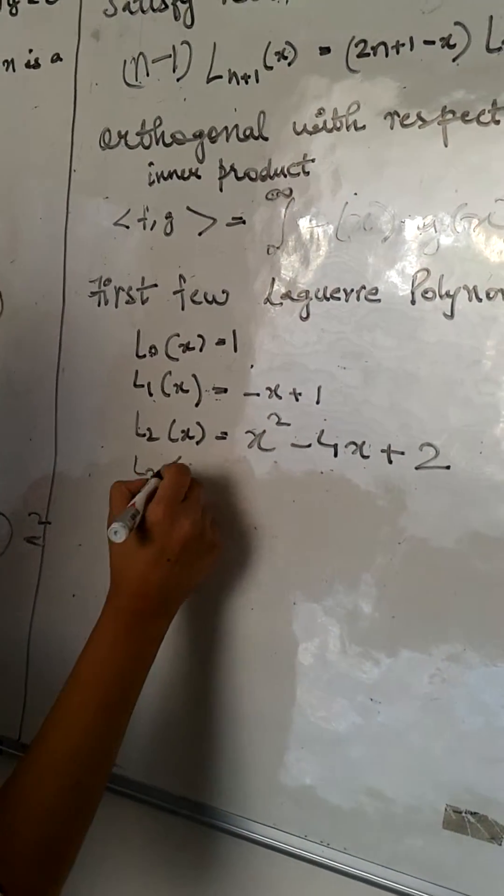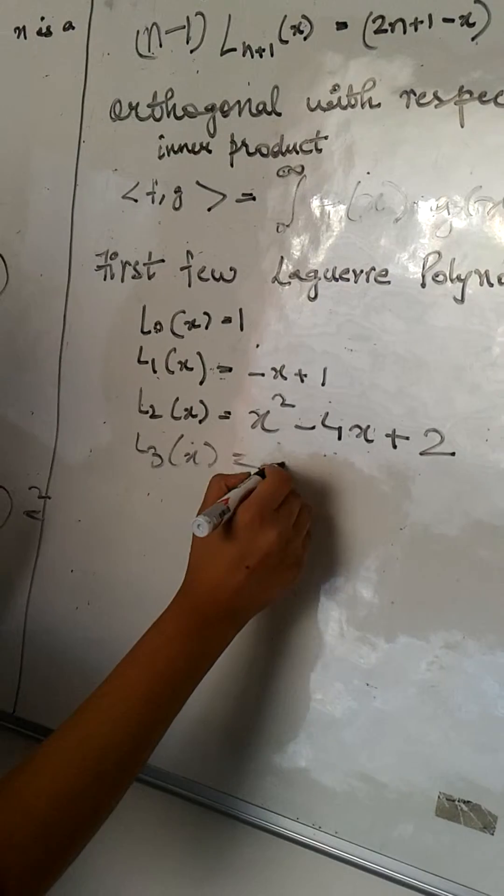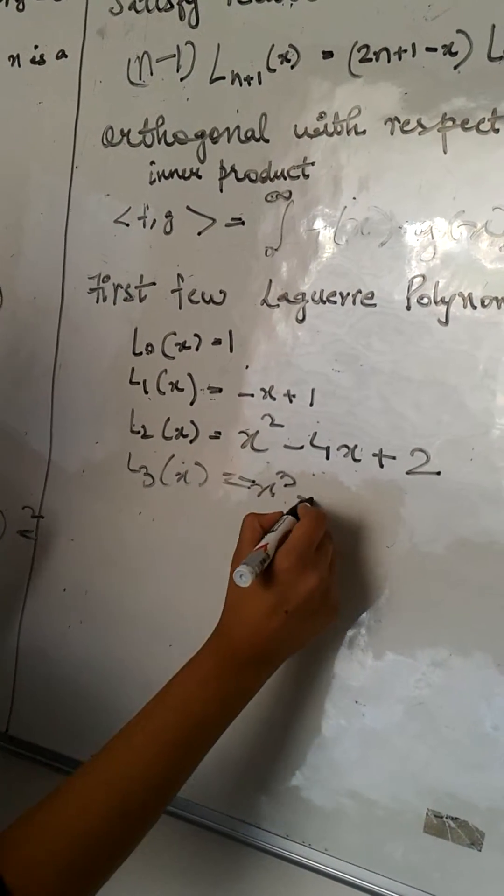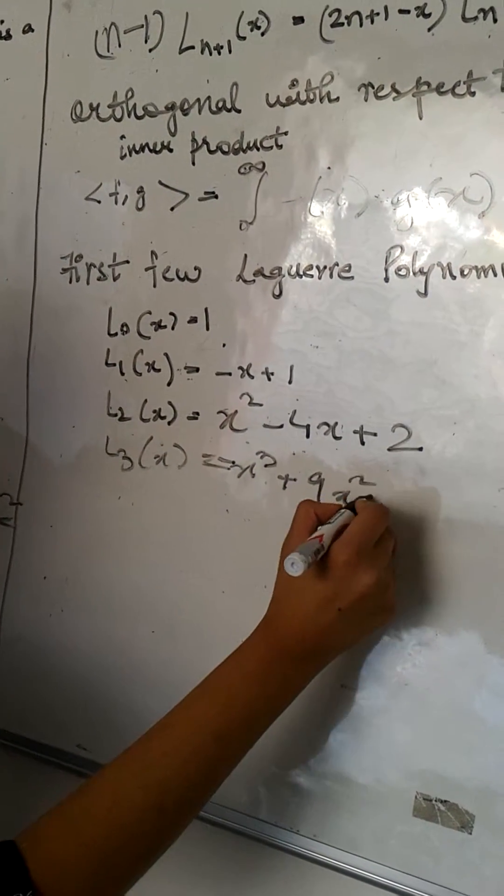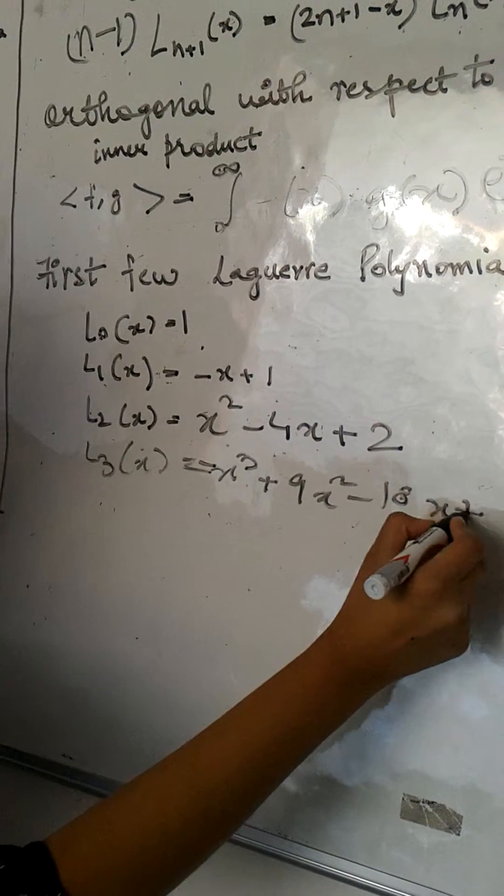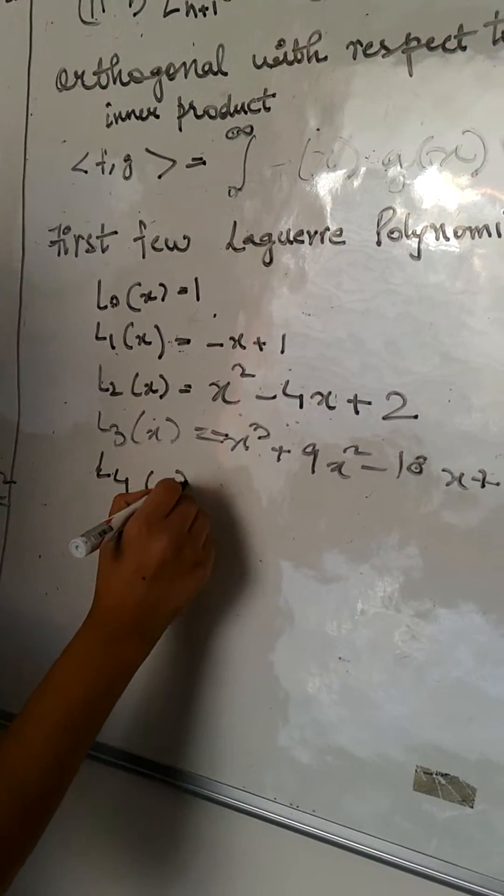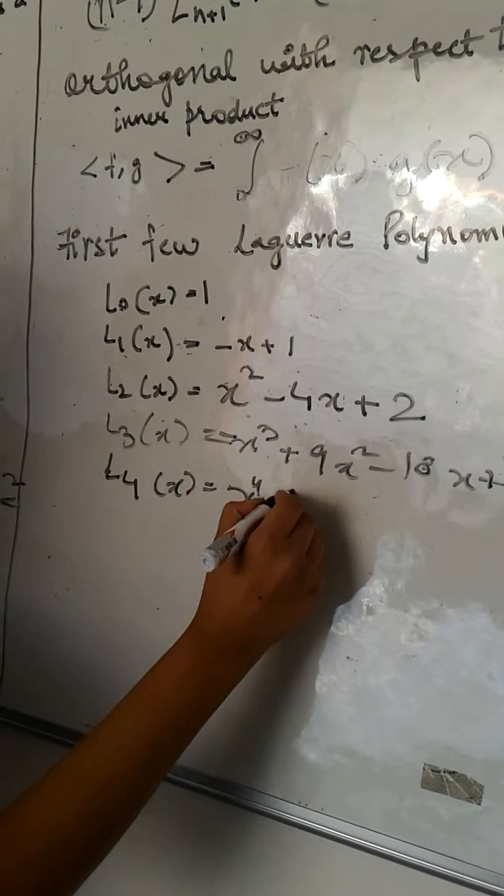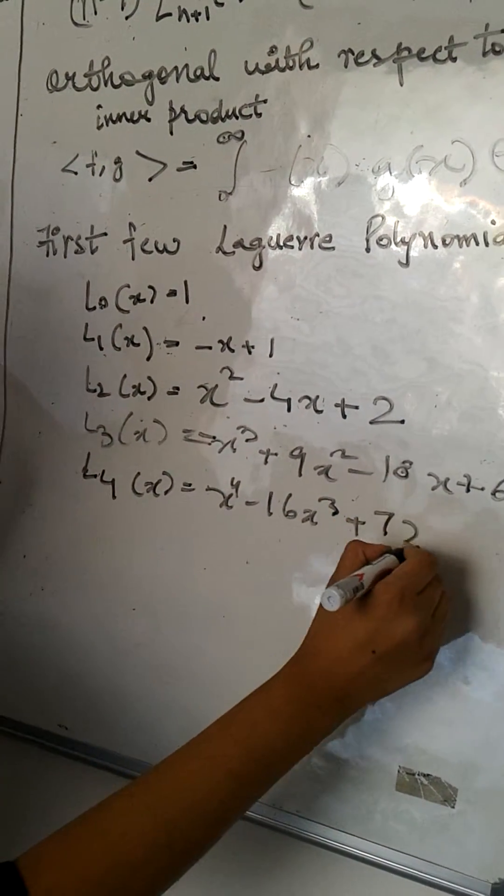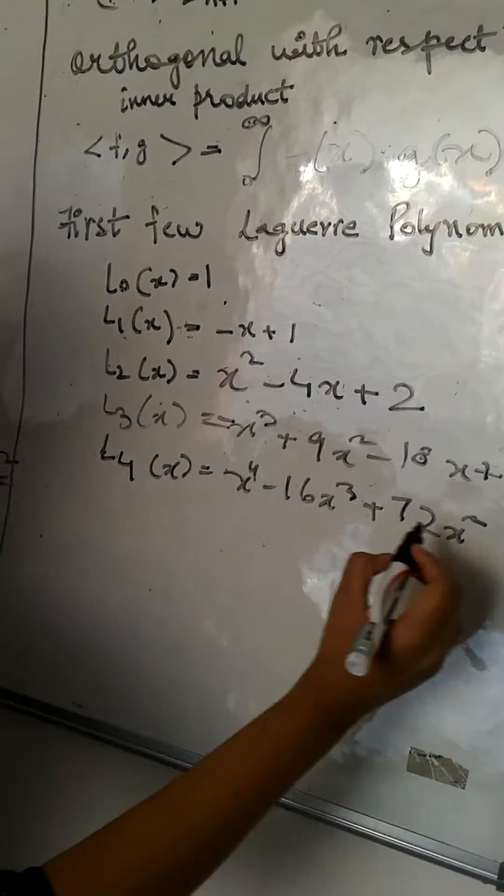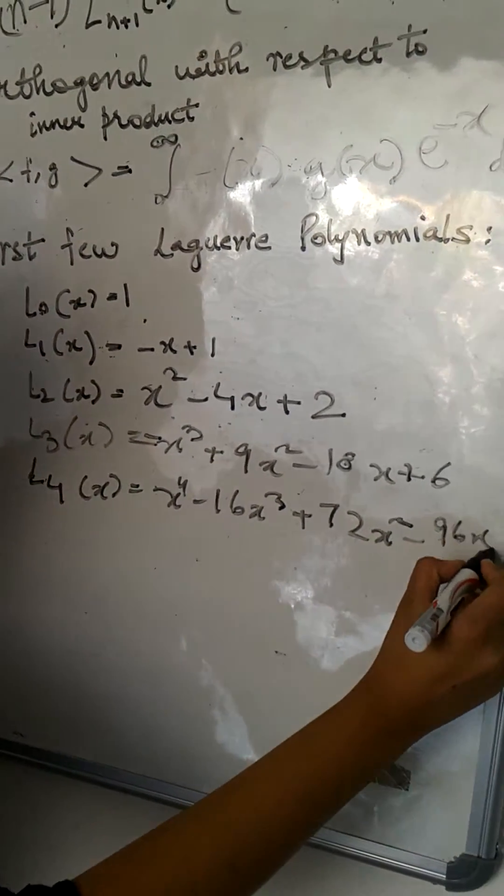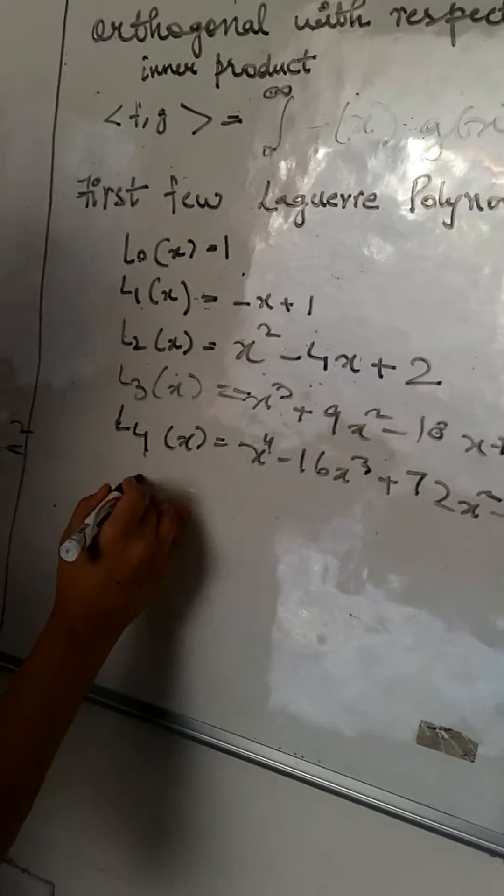For n=3, L(x)=-x³+9x²-18x+6. For n=4, L(x)=x⁴-16x³+72x²-96x+24 and so on.